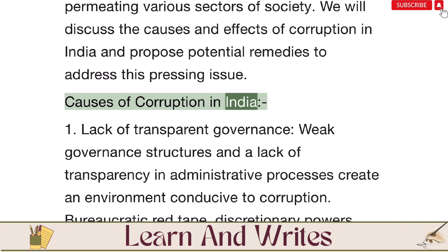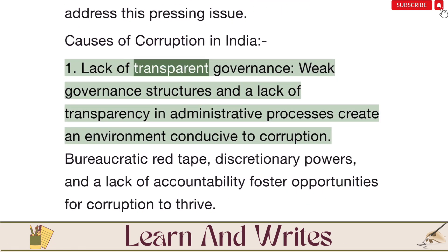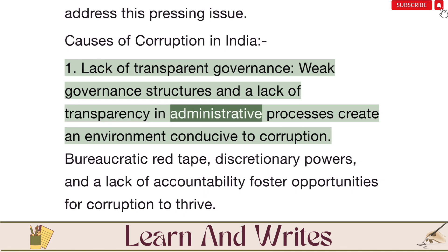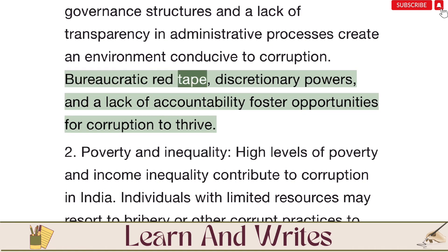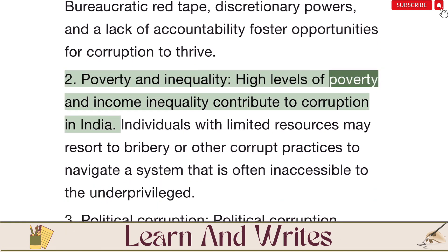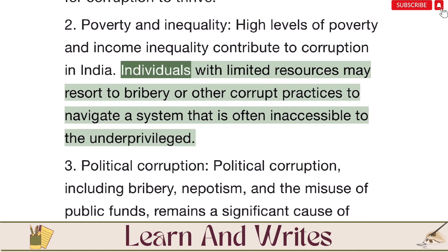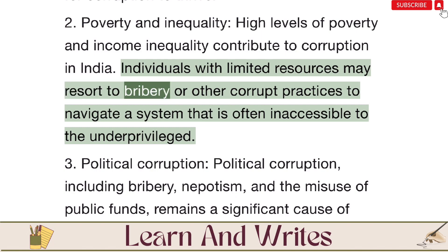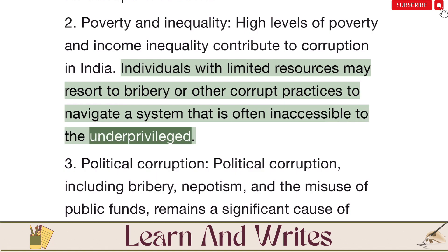Causes of Corruption in India. First, lack of transparent governance: weak governance structures and a lack of transparency in administrative processes create an environment conducive to corruption. Bureaucratic red tape, discretionary powers, and a lack of accountability foster opportunities for corruption to thrive. Second, poverty and inequality: high levels of poverty and income inequality contribute to corruption in India. Individuals with limited resources may resort to bribery or other corrupt practices to navigate a system that is often inaccessible to the underprivileged.